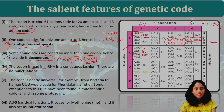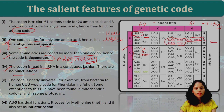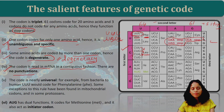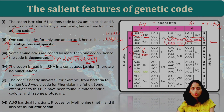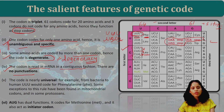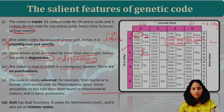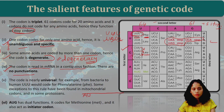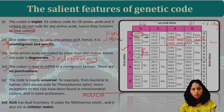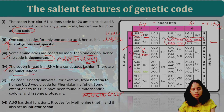The codon is read in mRNA in a contiguous fashion — that means there are no punctuations in mRNA. The codons are read continuously with no interruptions.